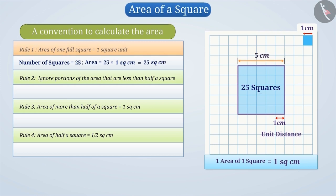Rule 2: Ignore portions of the area that are less than half a square. We notice that this figure does not have such squares. Rule 3: If more than half of a square is in a region, consider its area as 1 cm². We don't see such squares here.